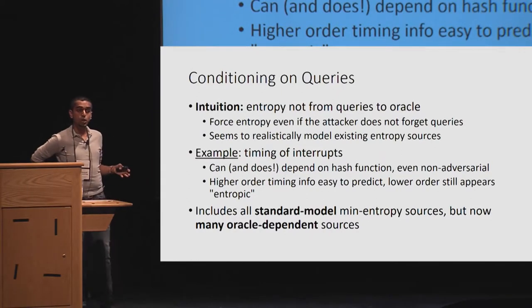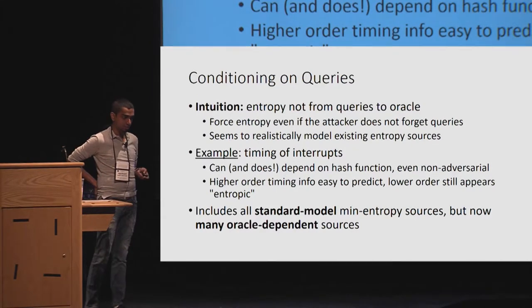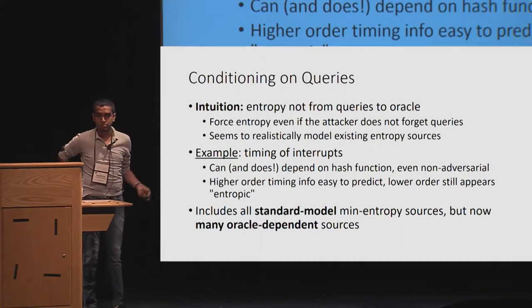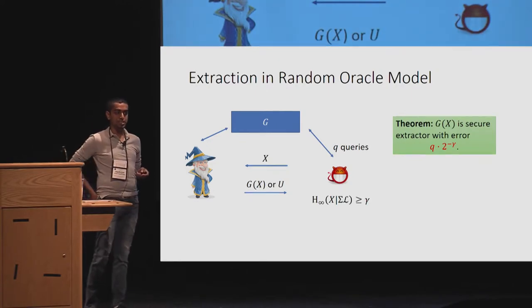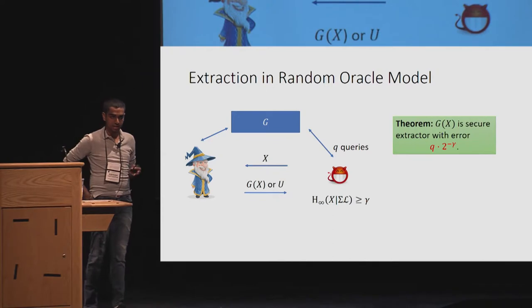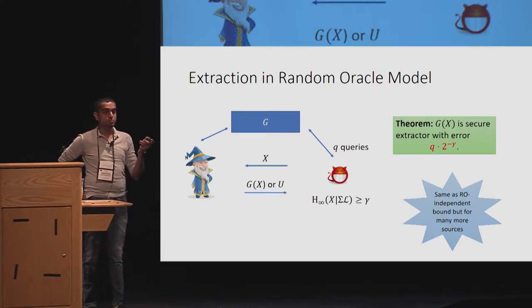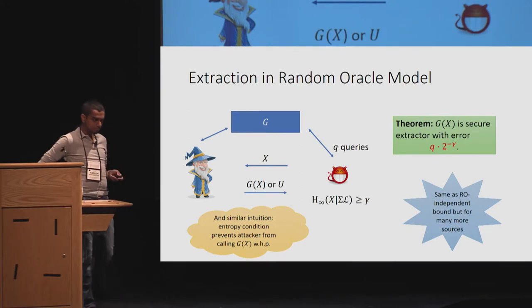The biggest takeaway that we did was we conditioned on the set of queries that the adversary makes to the random Oracle. What do we get using this principle in terms of a theorem for monolithic extraction? We get that G of X is a secure extractor with error Q times 2 to the negative gamma. For those of you who remember, this is the same bound as for the oracle-independent setting, but we have just shown it for a larger pool of sources.